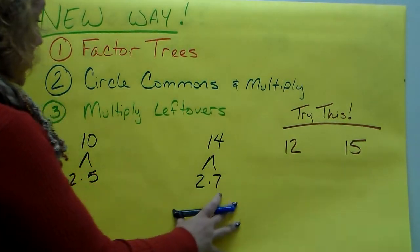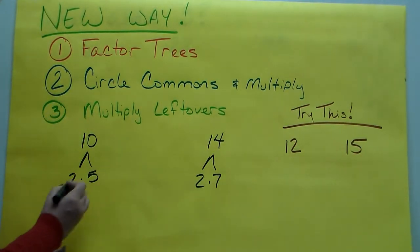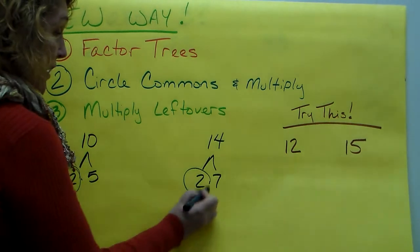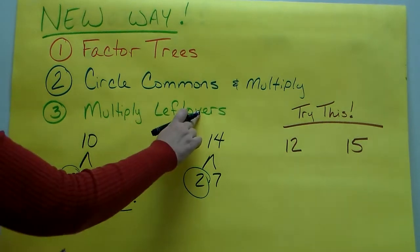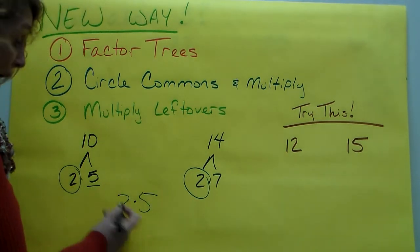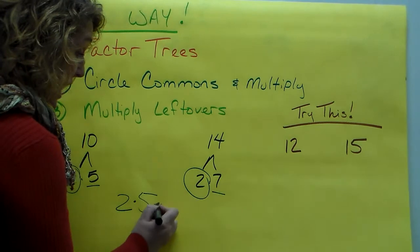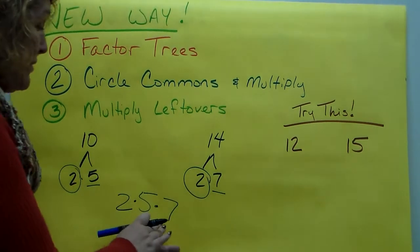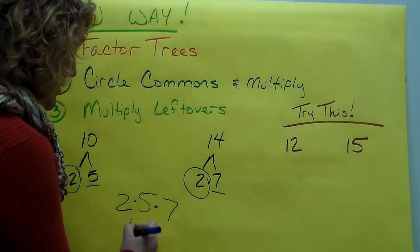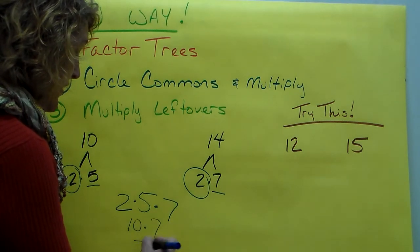We have 10 and we have 14 and we've broken them down. So we're going to circle the numbers that they have in common. They both have a 2. We're going to write down a 2. And then we're going to pull in the leftovers. There's a 5 left over here and there's a 7 left over here. 2 times 5 times 7, that's the same as 10 times 7, that's 70.